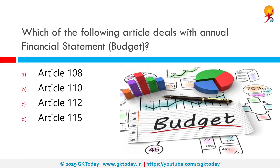Which of the following articles deals with the annual financial statement or budget? That would be Article 112. According to Article 112 of the Indian Constitution, the union budget of a year, also referred to as the annual financial statement, is a statement of the estimated receipts and expenditure of the government for that particular year.